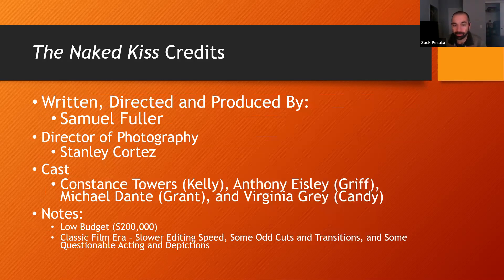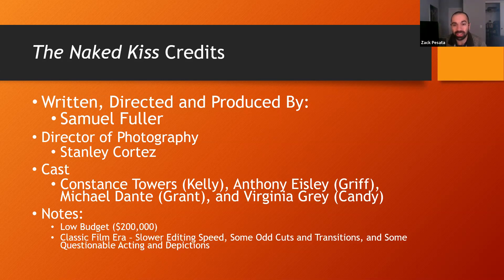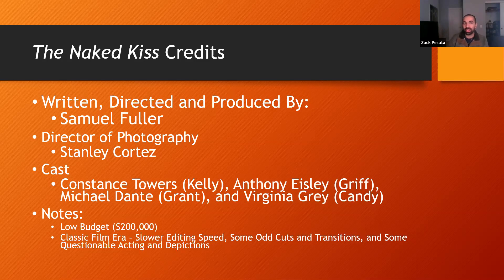A little information on the credits — you're going to want to write some of this down. The film was written, directed, and produced by Samuel Fuller. Director of photography was Stanley Cortez. The cast: Constance Towers plays Kelly — the protagonist; Anthony Eisley plays Griff; Michael Dante plays Grant; and Virginia Gray plays Candy. Keep in mind this was a low-budget film — made for $200,000 on a tight schedule — so it may be a little rough around the edges formally. This is our film representative of the classic film era, right on the cusp before New Hollywood, in 1964.